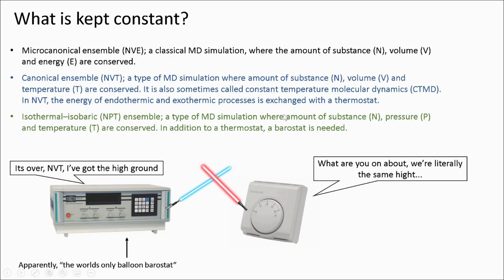The isothermal isobaric ensemble, referred to as NPT, keeps the amount of substance, pressure and temperature constant. In the same way that we had a thermostat to keep the temperature constant, we refer to the method used to conserve the pressure as a barostat.